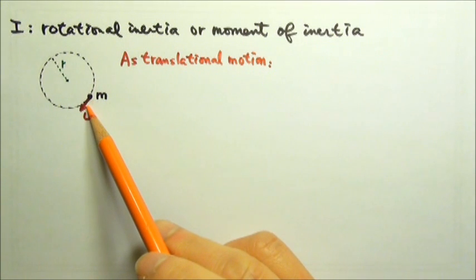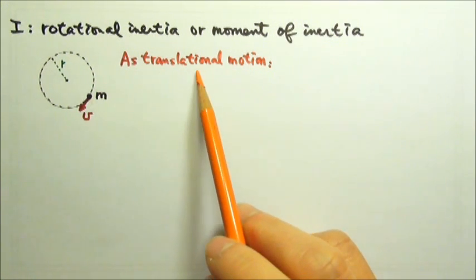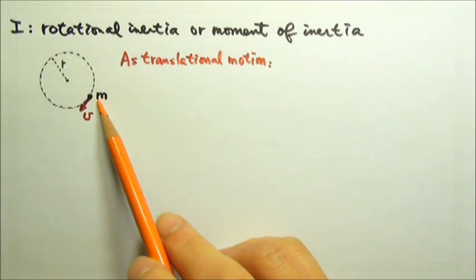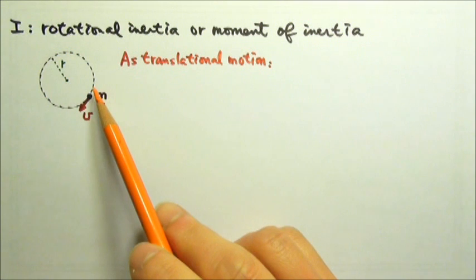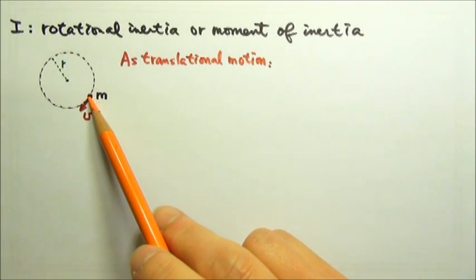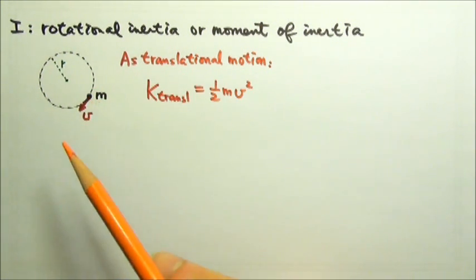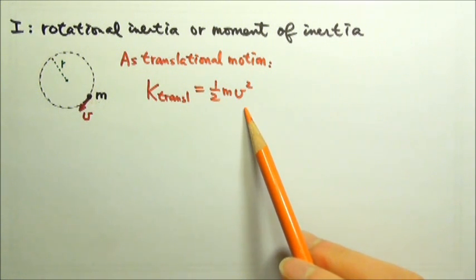For this particular motion, we can treat it as a translational motion of the point mass. Since it is a point mass, it is its own center of mass. So we can treat its motion as translational motion, which means its kinetic energy is one-half mv squared.